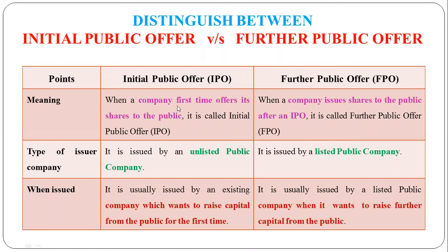When a company is first time selling shares to the public, we call it an Initial Public Offer, that is IPO. And after the IPO, when the company issues shares again in the share market, we call it FPO, that is Further Public Offer.